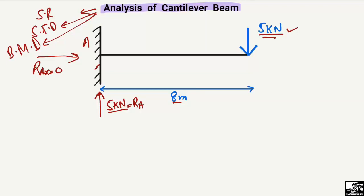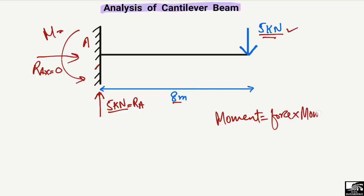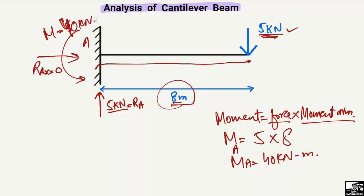Now to find out the moment at point A: moment equals force multiplied by moment arm. The force is 5 kilonewton, and the moment arm is the perpendicular distance from the load to the point where you want to find the moment, which is 8 meters here. So moment at A equals 5 into 8, which gives us 40 kilonewton meter.